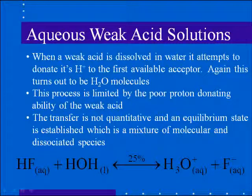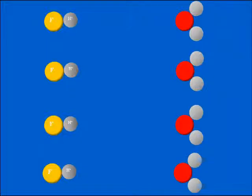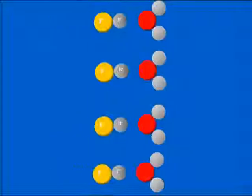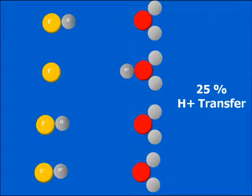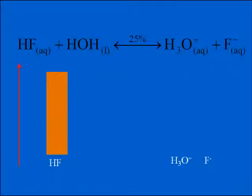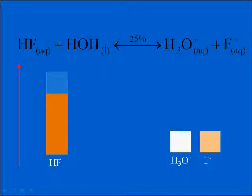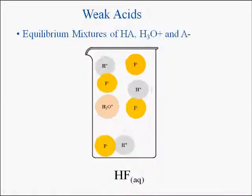Our example involves hydrofluoric acid, which is a weak acid. Hydrofluoric acid dissociates about 25% upon dissolving in water to form hydronium ions and fluoride ions. At the molecular level, about three quarters of the hydrofluoric acid molecules that dissolve do not transfer a proton, and only about 25% effectively donate a proton to form hydronium and fluoride ions. A solution of hydrofluoric acid is therefore mostly undissociated HF, with only a small portion dissociated into hydronium ions and F⁻.